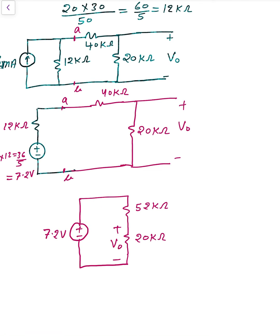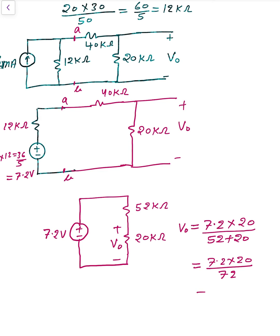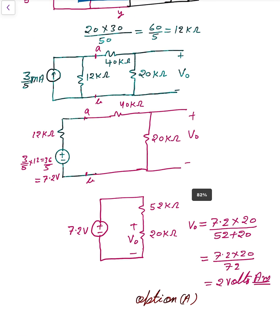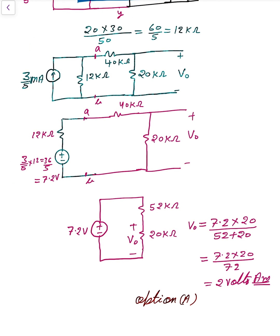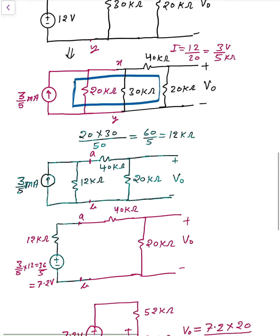Using the voltage division rule, V0 equals 7.2 into 20 divided by the sum of 52 plus 20, which is 72. So 7.2 into 20 divided by 72 gives 2 volts — that is the correct answer. Option A is the correct option. You can solve a lot of problems using many methods, but source transformation is the most effective method.